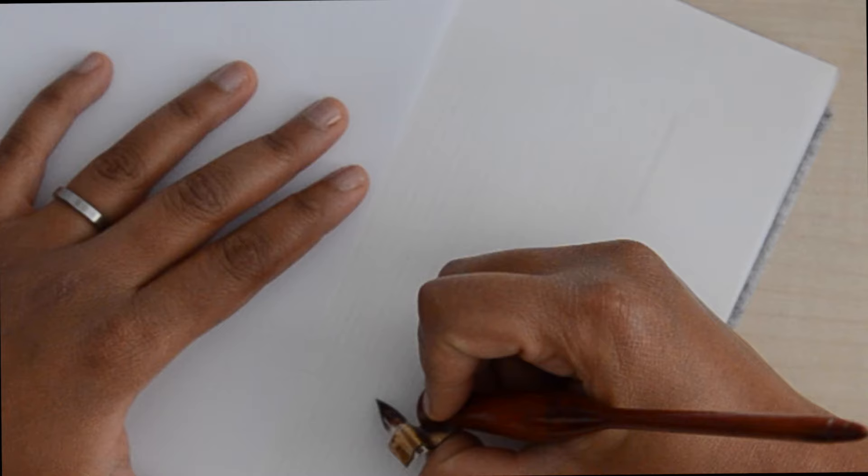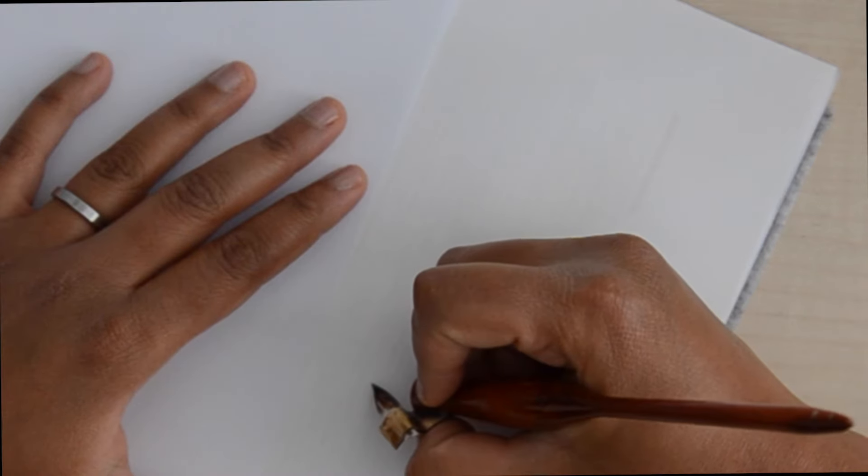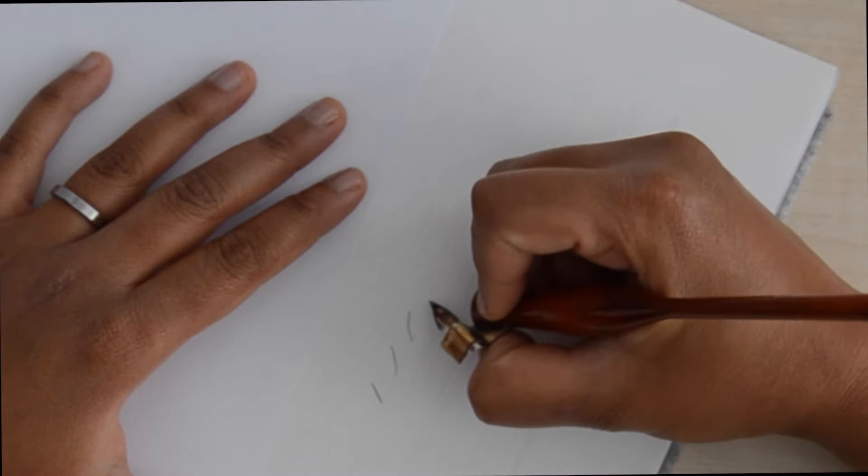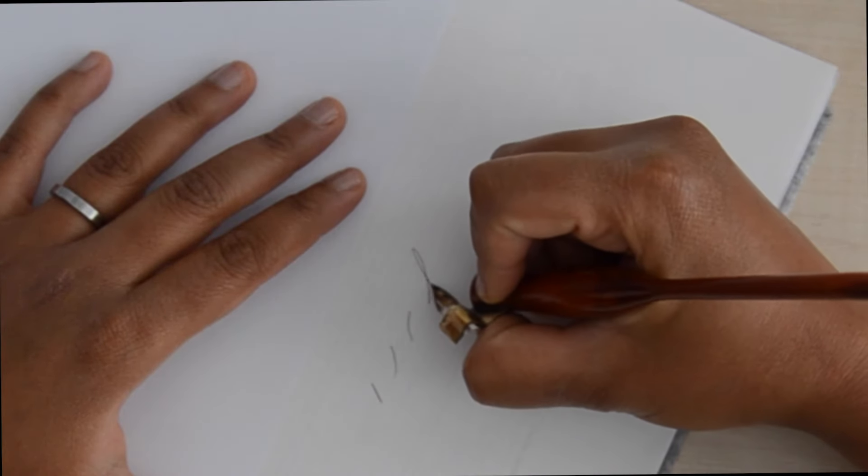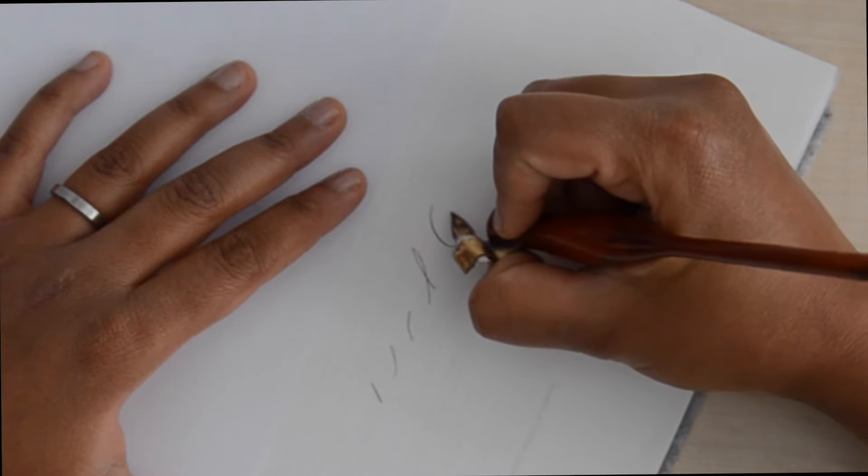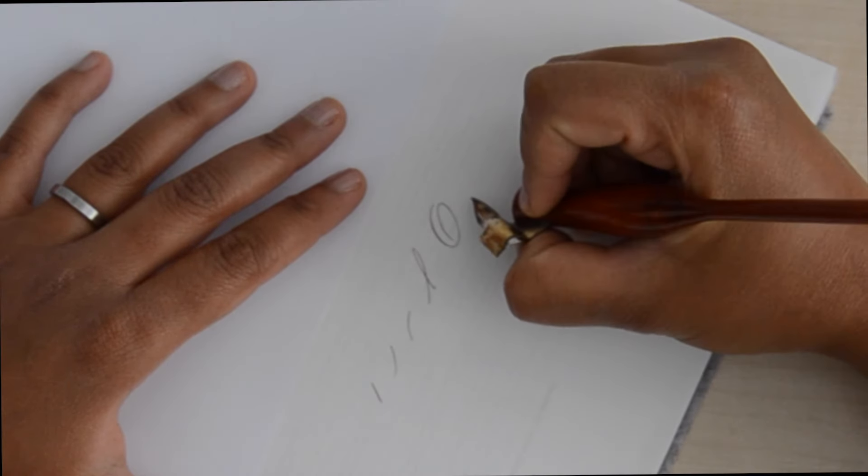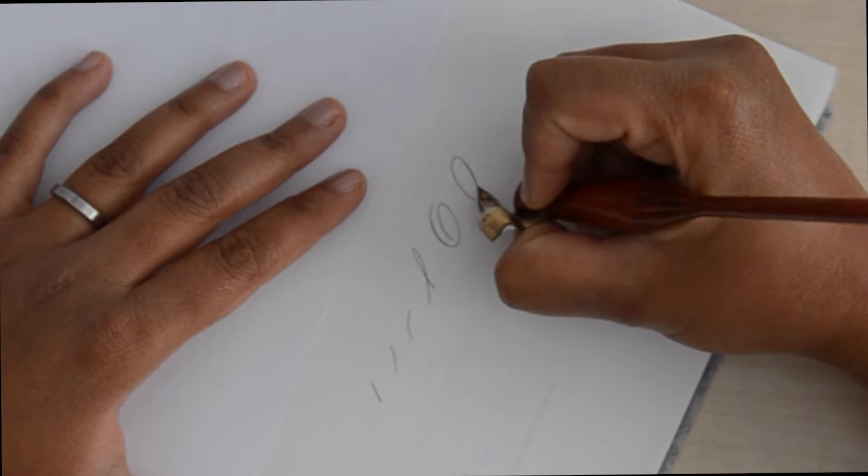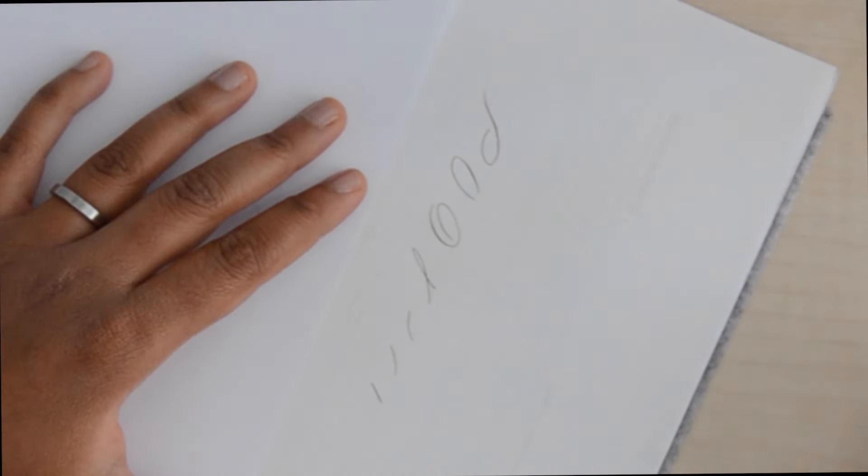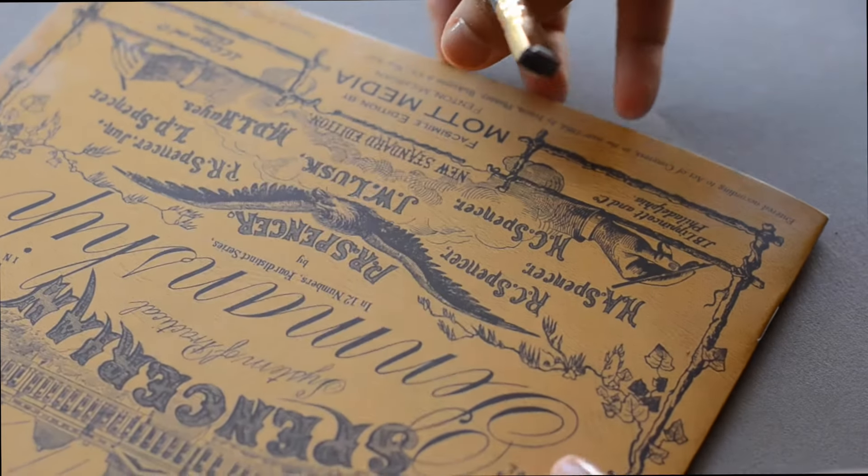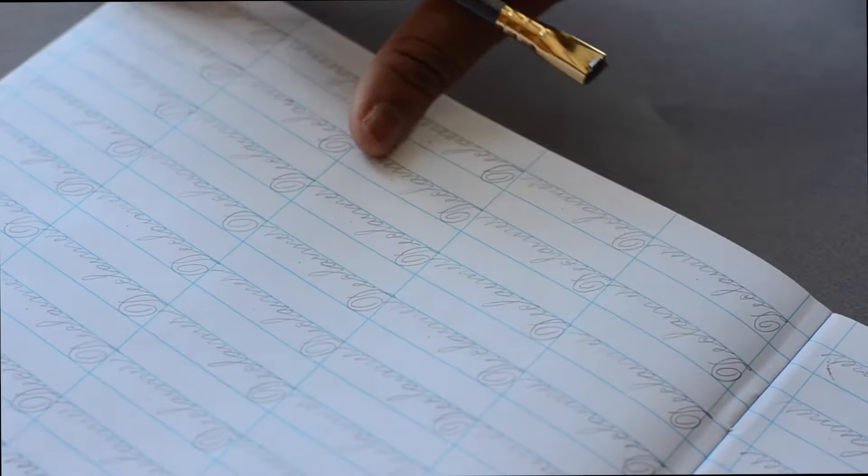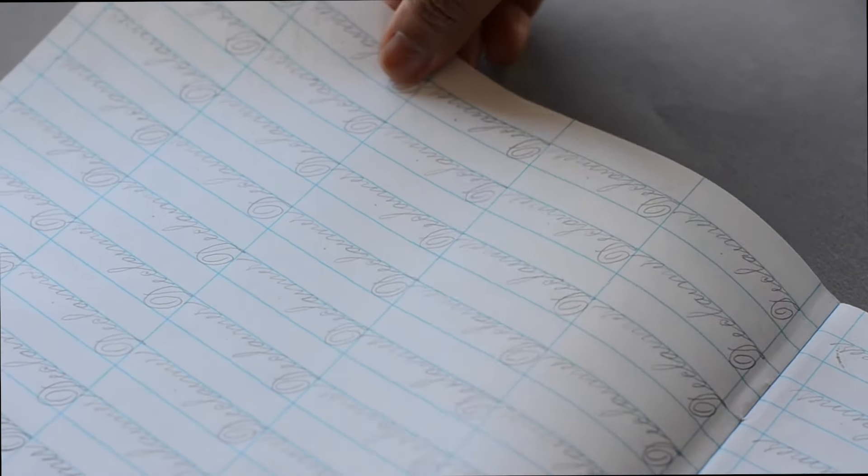So basically the idea of these workbooks is that there are seven strokes in Spencerian: the straight line, the right curve, the left curve, the extended loop, the direct oval, the reversed oval, and the capital stem. And together those comprise every letter that you would ever write. So the workbooks just take you through progressively more complicated versions so you can see how different letters connect.